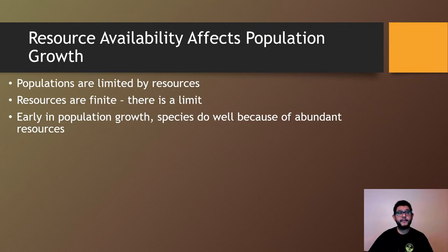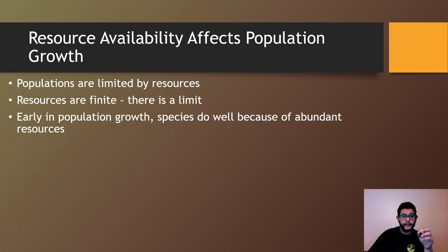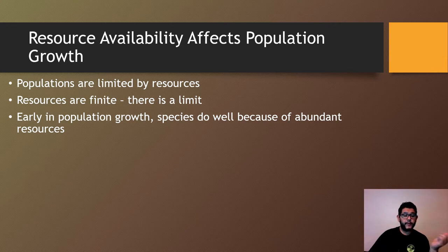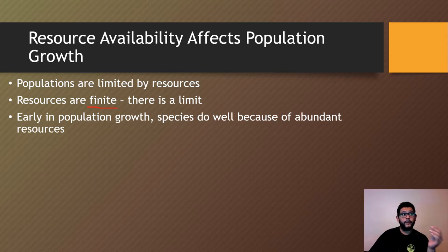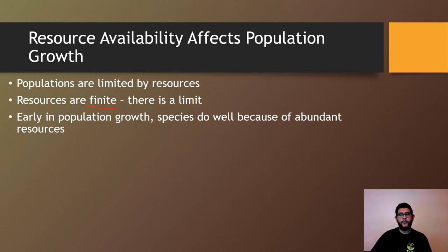This is going to tie in some of those other topics we spoke about in the previous videos, but the idea is that populations are limited by their resources. There's not going to be an unlimited amount of things that a population can get to when it comes to food, water, and space. The term we want to learn here is that resources are finite — they are only going to be available to a certain point. Now, some things may be infinite like sunlight, but some resources tend to run out.